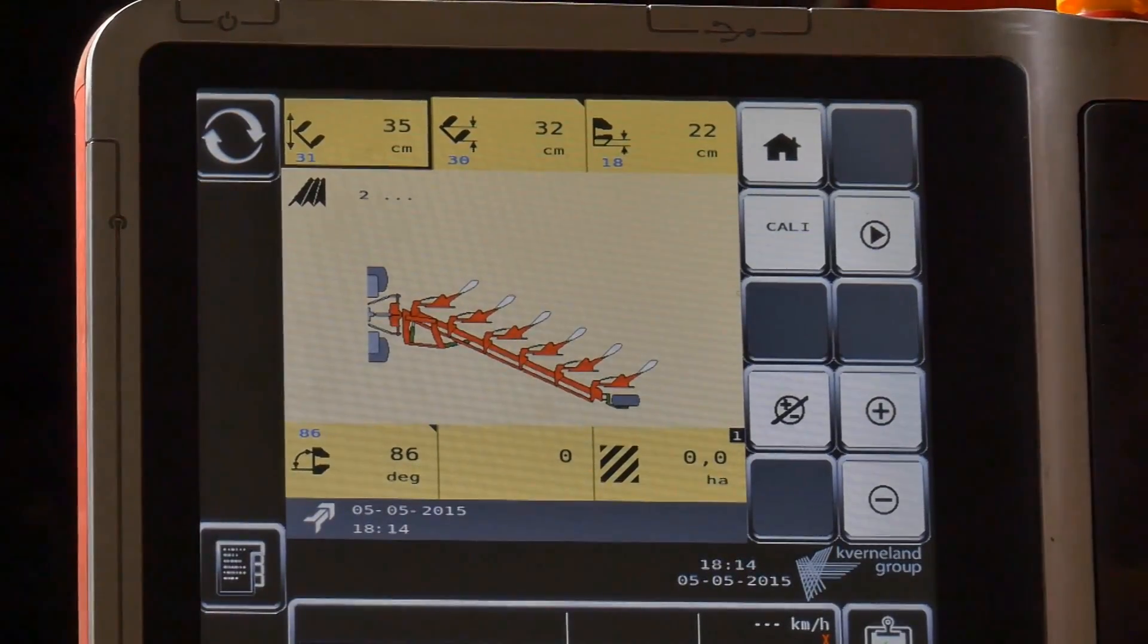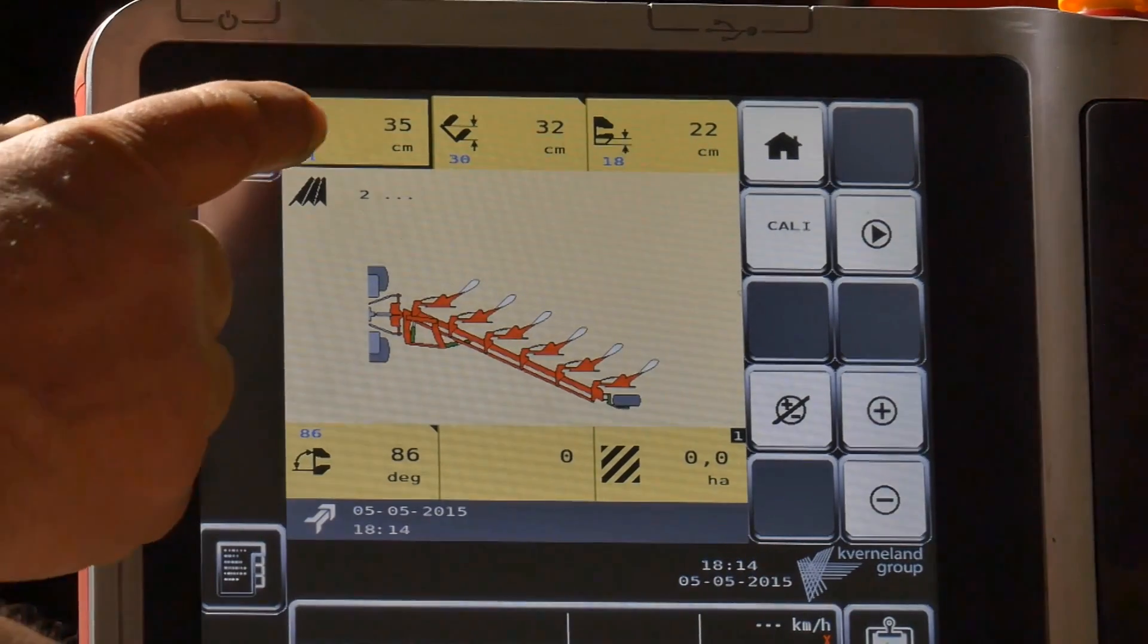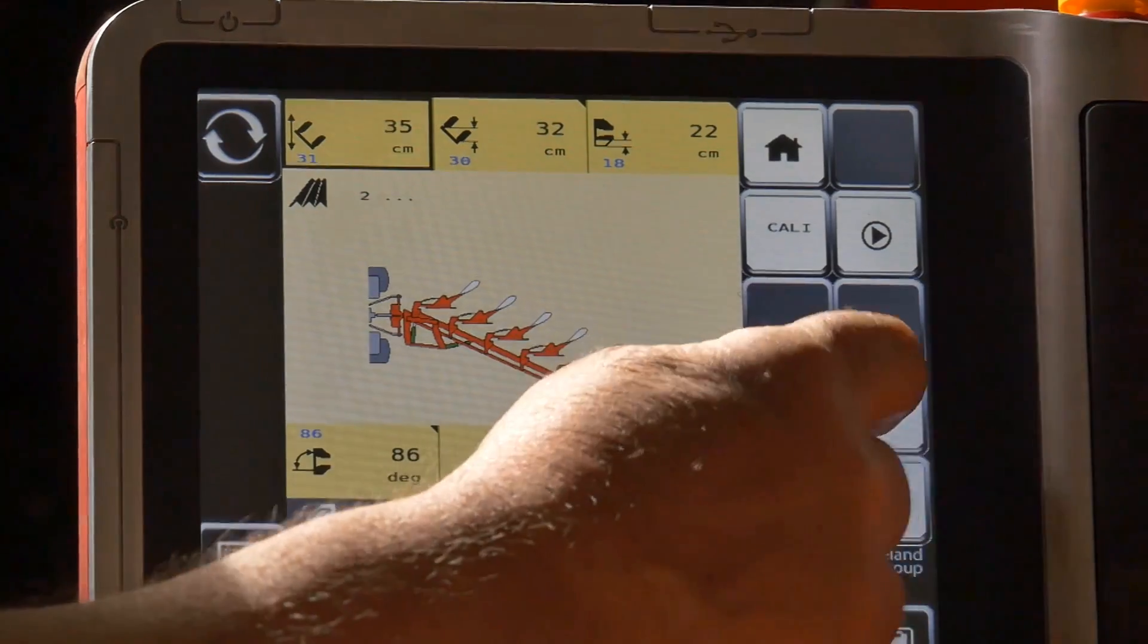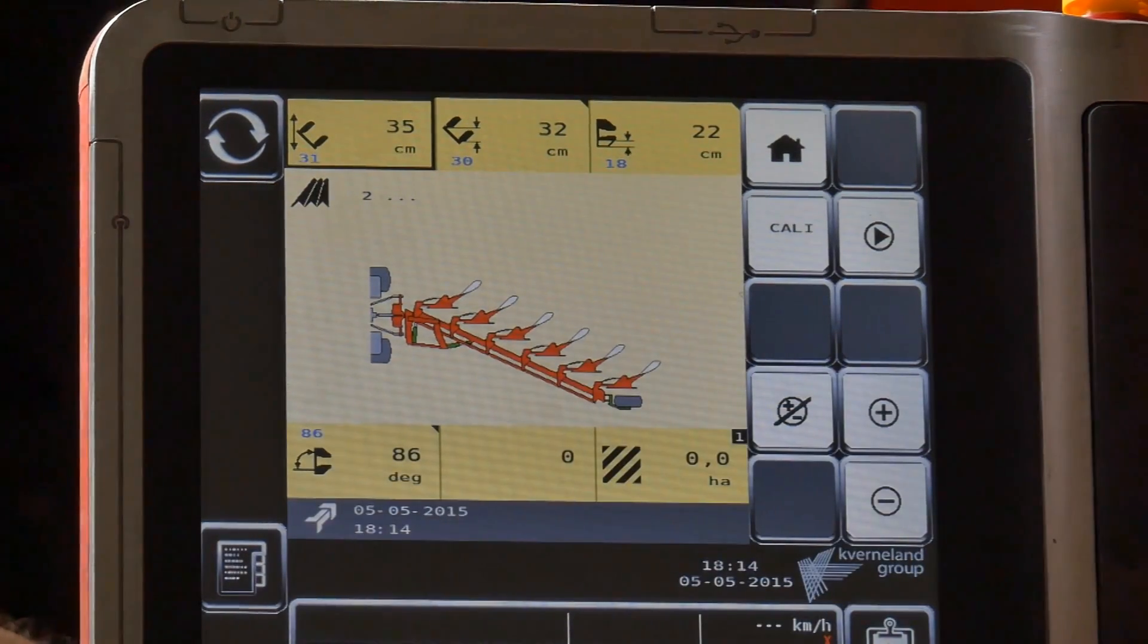So here on the tablet we have the details. Yes, first we have the first furrow and we go wider and smaller with the plus or minus buttons.